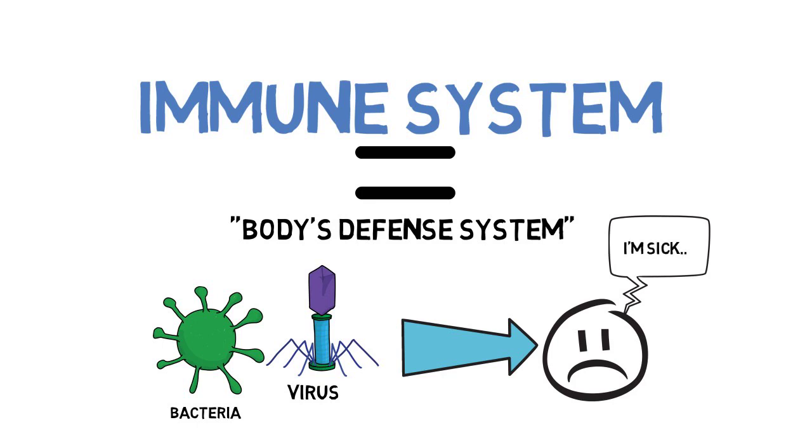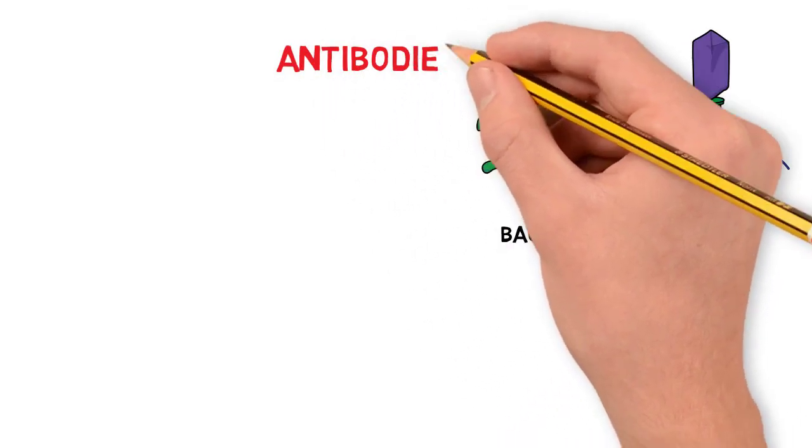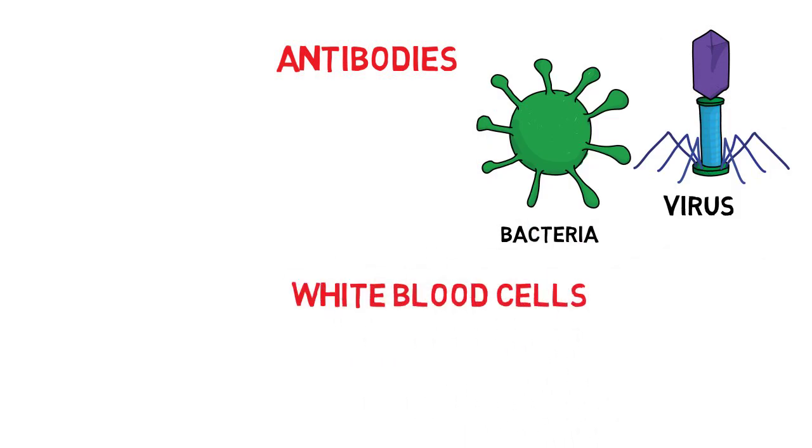The immune system has many layers of defense and is made up of a complex series of organs and cells. For our purposes, the important parts of the immune system you should know about are in the blood. These include things like antibodies and white blood cells.